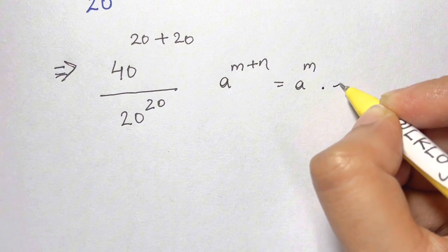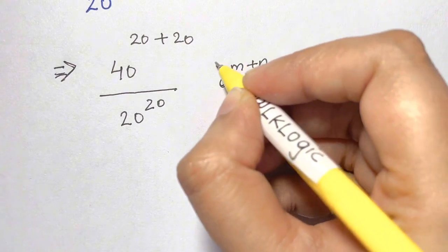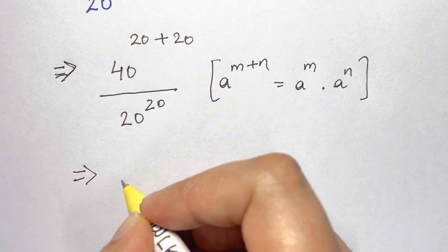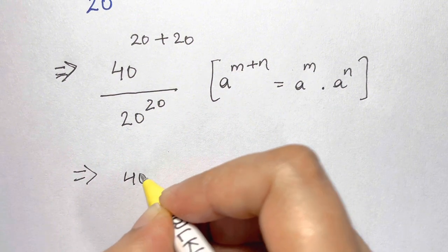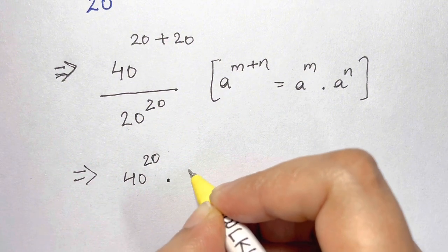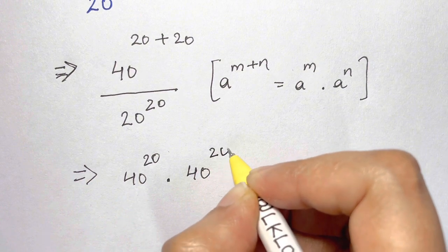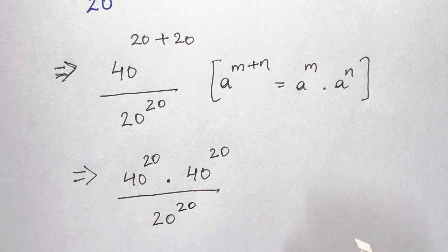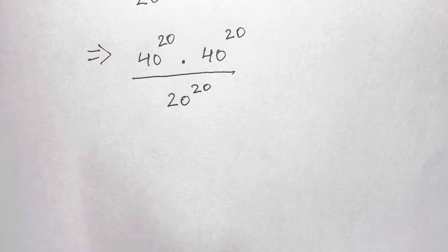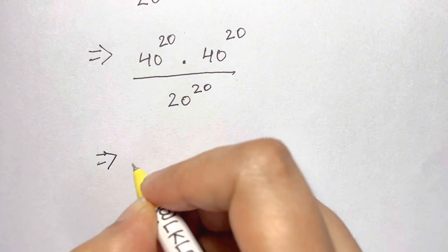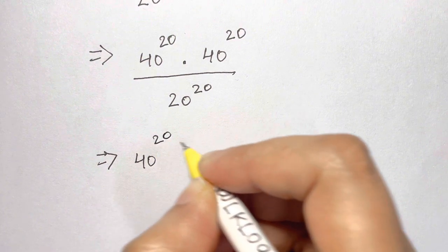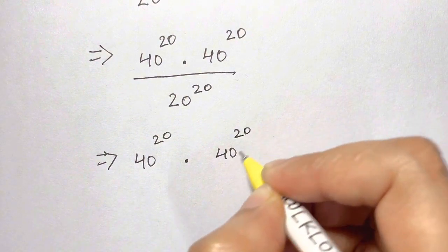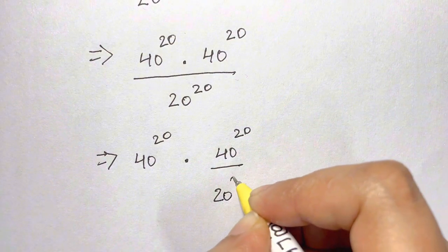According to this law, we'll get 40 to the power of 20 times 40 to the power of 20, over 20 to the power of 20. Now we're going to split them: 40 to the power of 20 times 40 to the power of 20 over 20 to the power of 20.